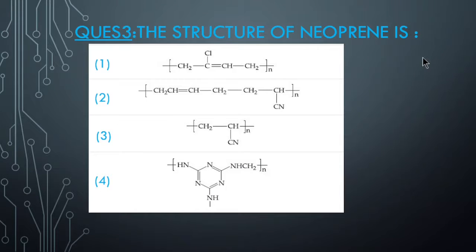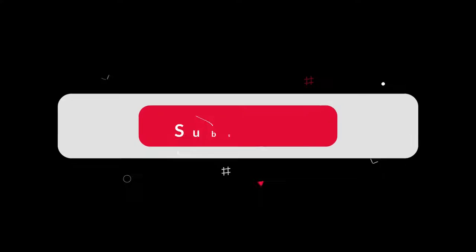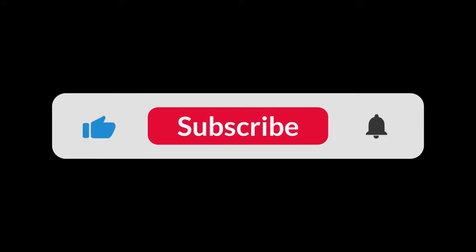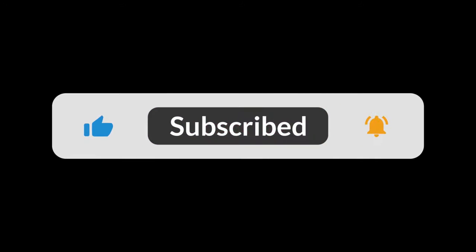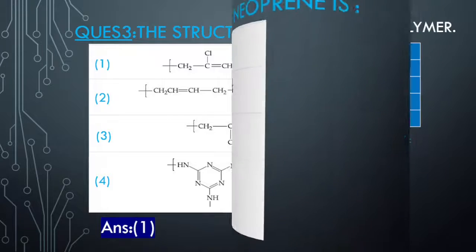The structure of Neoprene we have seen in the previous question. Answer this question: it is made from chloroprene. Now next question.